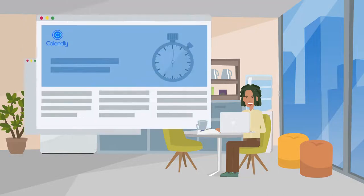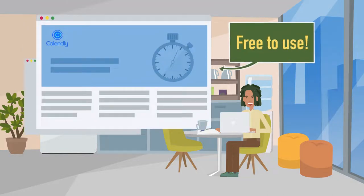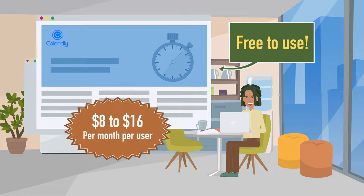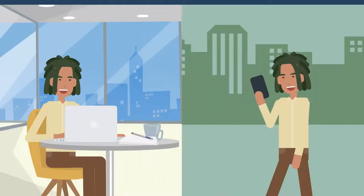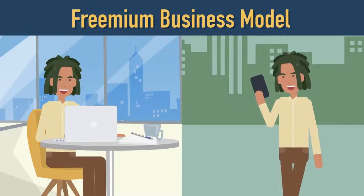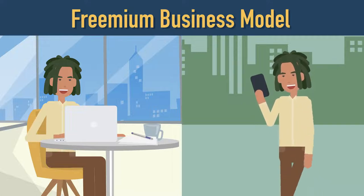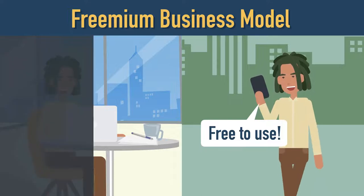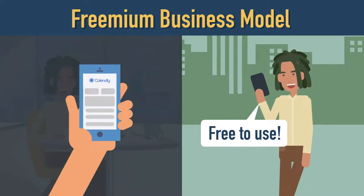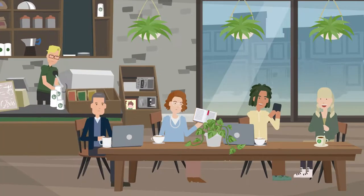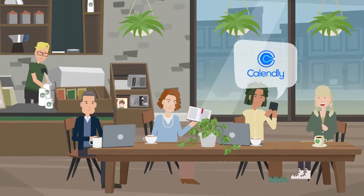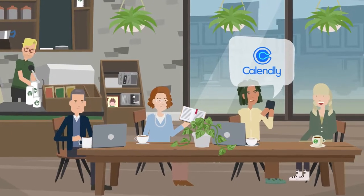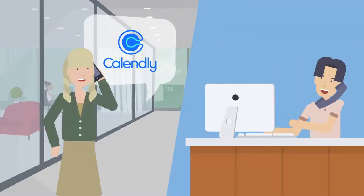The basic version of Calendly is free to use, while the premium version costs anywhere from $8 to $16 per month per user. The advantage of the freemium business model is that it doesn't require a lot of marketing to attract new users. The basic version is free to use, but users must share their schedules with Calendly logo attached, which means if their friends like the product, they could see the logo and sign up as well. The word-of-mouth approach helped save the company a lot of marketing costs.